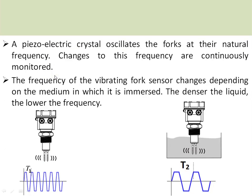To summarize the operation: a piezoelectric crystal oscillates the two forks at the natural frequency, and changes in this frequency are continuously monitored by the other piezoelectric crystal. Whenever there is no medium in contact with the forks, the frequency is high. When a medium comes in contact with the forks, the frequency of vibration decreases. The denser the liquid or medium, the lower the frequency. This decrease in frequency is monitored by the electronic circuit, which gives an output.